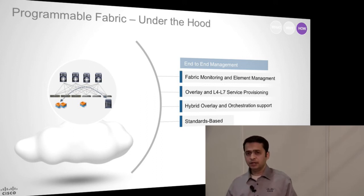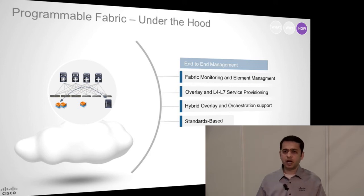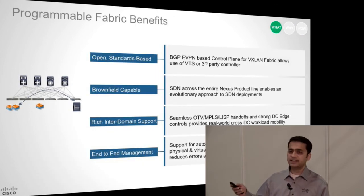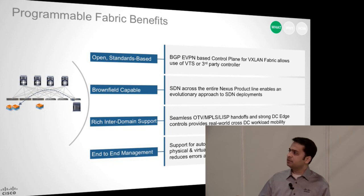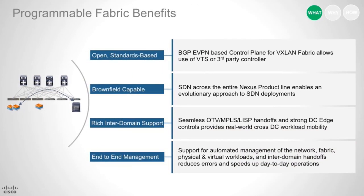So, summarizing — what are the benefits of Programmable Fabric for you? It's open and standards-based: the eBGP EVPN control plane for VXLAN fabric allows the use of VTS or a third-party controller to orchestrate this. It's brownfield capable — this SDN is available across all of your Nexus product lines: 2K, 5K, 7K, 9K. So it allows you an evolutionary way to migrate onto SDN rather than in a disruptive rip-and-replace fashion. It gives you very rich inter-domain support.